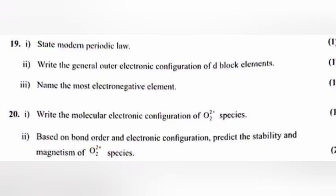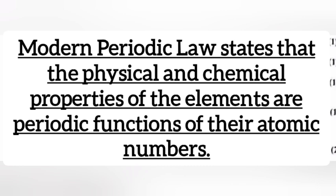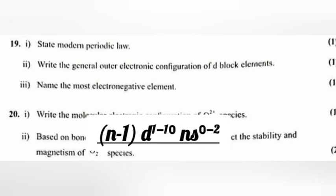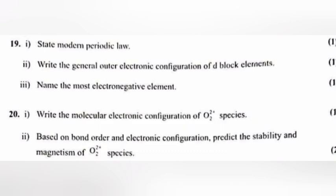Question 19: 1. State modern periodic law. Answer: Modern periodic law states that the physical and chemical properties of the elements are periodic functions of their atomic number. 2. Write the general outer electronic configuration of d-block elements. Answer: n minus 1 d raise to 1 to 10 n s raise to 0 to 2. 3. Name the most electronegative element.